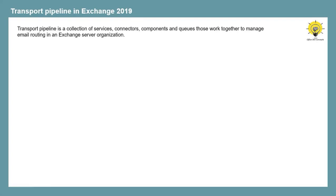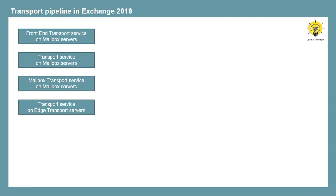Transport Pipeline is a collection of services, connectors, components, and queues that work together to manage email routing in Exchange Server organization. In Exchange 2019, Transport Pipeline has four components: Front-end Transport Service, Transport Service, Mailbox Transport Service, and Transport Service that runs on the Edge Transport Server.